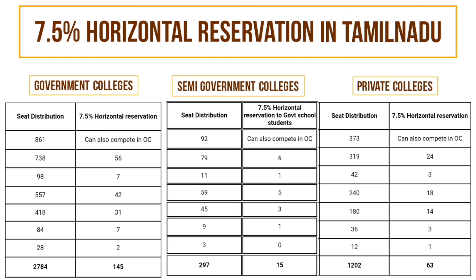For the cut-off calculation: in government colleges, there are 58 OC seats. BC students have 6 seats in semi-government colleges and 54 seats in private colleges. There are also 58 OC seats available. You can find the link in the description for more details. Bye.